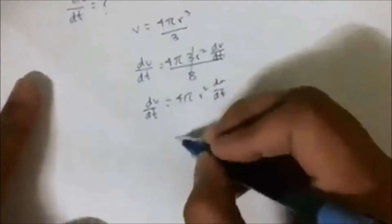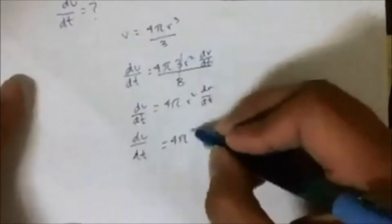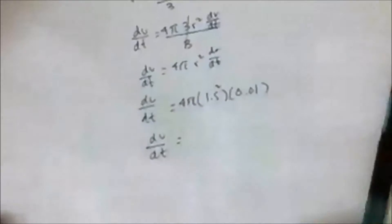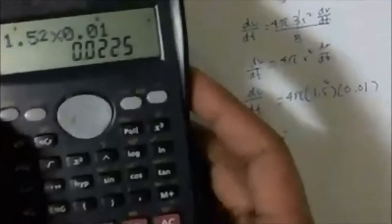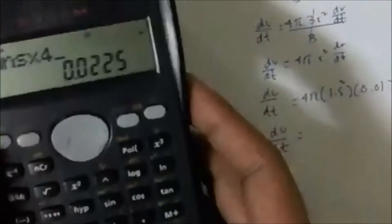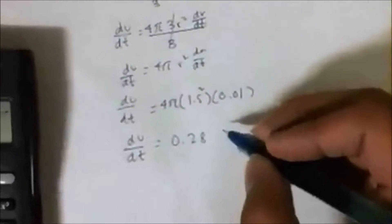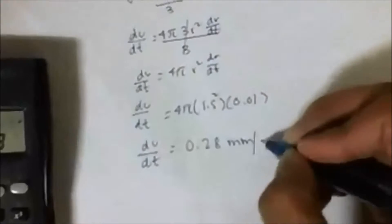We substitute the values — the radius and dr/dt. So dV/dt equals 4π times 1.5 squared times 0.01. Computing 1.5 squared times 0.01 times 4π gives the answer of approximately 0.2828 micrometers per day.